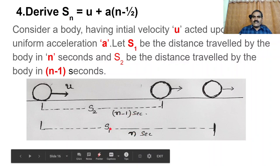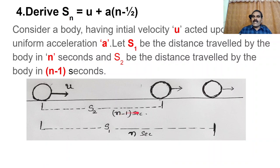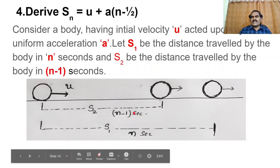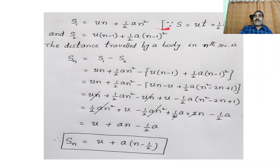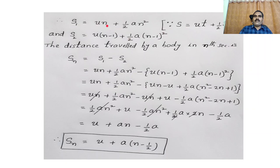In N seconds, the distance S1 equals UT plus half AT square. With T equal to N: S1 equals UN plus half AN square. In N minus 1 seconds (T equals N minus 1), the distance S2 equals U times (N minus 1) plus half A times (N minus 1) whole square.